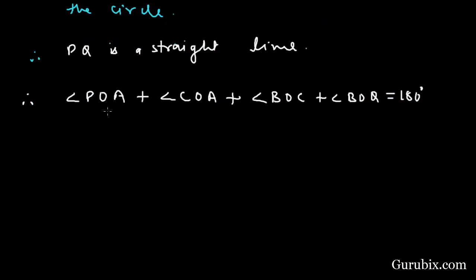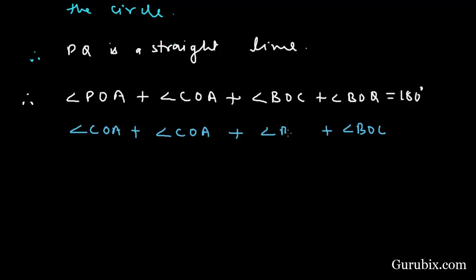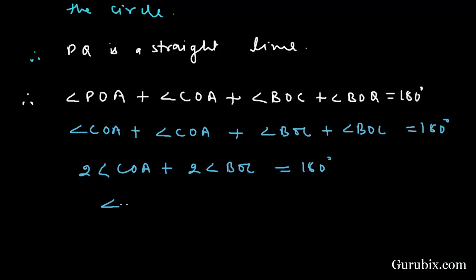From equation number one, angle POA equals angle COA, so we replace angle POA with angle COA. From equation number two, angle BOQ equals angle BOC, so we replace angle BOQ with angle BOC. This gives us: angle COA plus angle COA plus angle BOC plus angle BOC equals 180 degrees, which simplifies to 2 times angle COA plus 2 times angle BOC equals 180 degrees. Therefore, angle COA plus angle BOC equals 90 degrees.